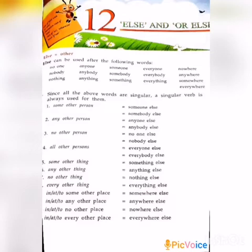Ninth: in, at, or to some other place is equal to somewhere else. Tenth: in, at, or to any other place is equal to anywhere else. So all of you remember which words come before 'else' — they are given on page number 59. Else is equal to other — just remember that.